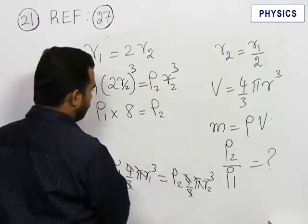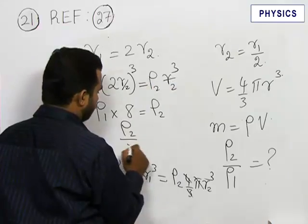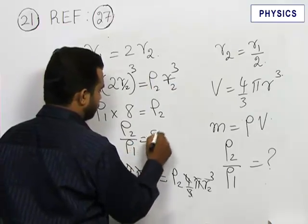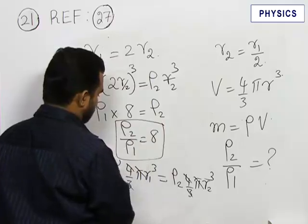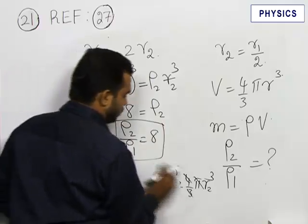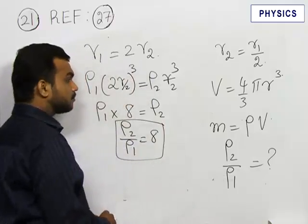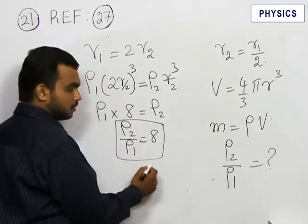Finally, we got the value ρ2/ρ1 = 8. This is the ratio asked in the question. So the answer is option number 3.